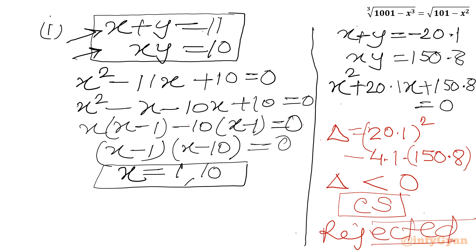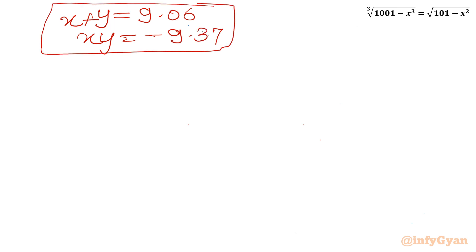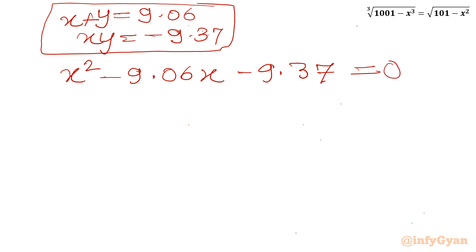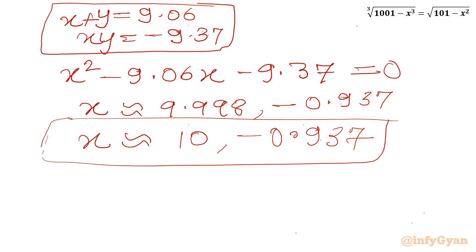Now for system 3: x plus y equals 9.06 with xy equals negative 9.37. Framing the quadratic: x square minus 9.06x minus 9.37 equals 0. Solving this quadratic equation, I get approximate values x equal to 9.998 and negative 0.937, which I can write approximately as 10 and negative 0.937. So we can write our final answer for this radical challenge.